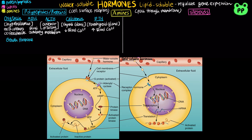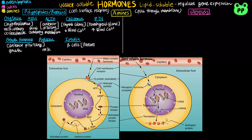Growth hormone released by the anterior pituitary gland functions in regulating growth. Prolactin secreted by the anterior pituitary gland functions in milk production. Insulin is secreted by pancreatic beta cells and functions in lowering blood glucose. Its antagonistic hormone, glucagon, is secreted by pancreatic alpha cells and functions in increasing blood glucose.